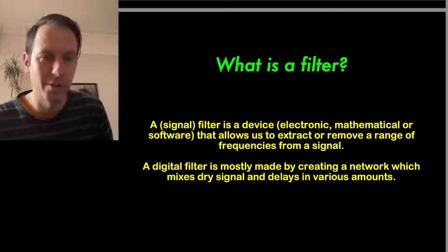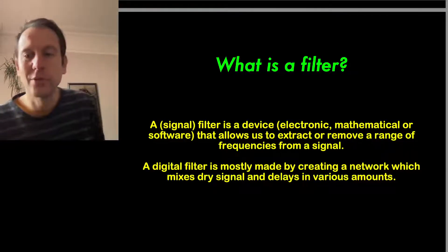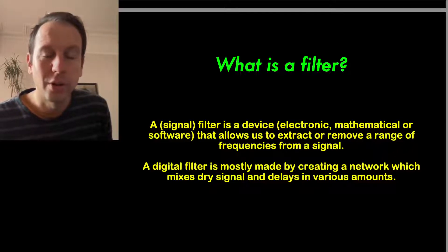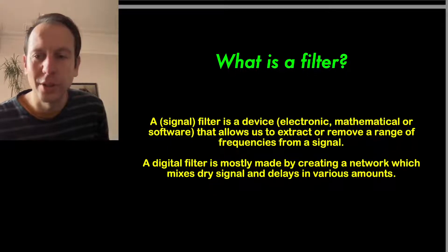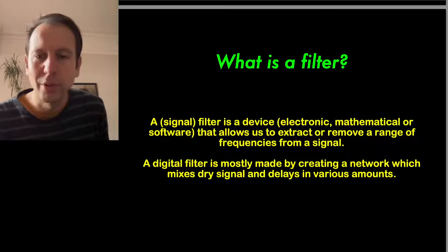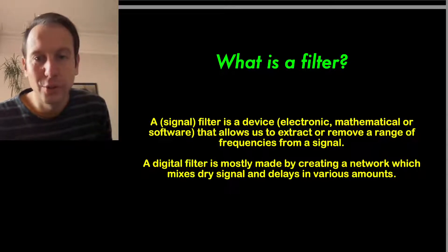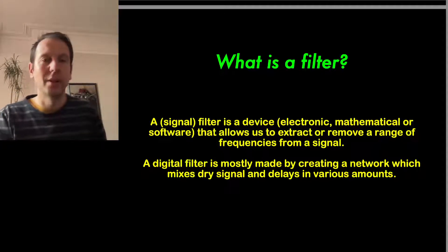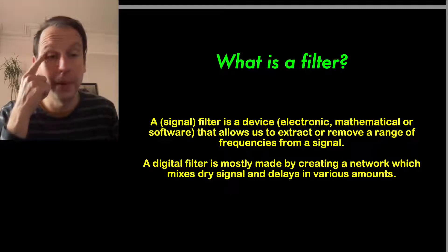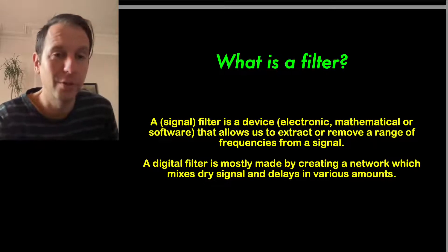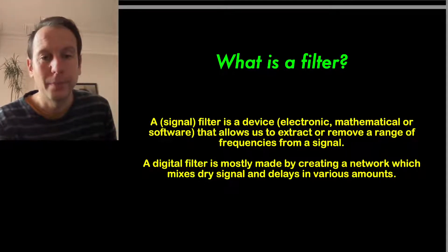We'll first discuss signal filters and then broaden the discussion. In terms of signals, they could be analog electronic signals or digital electronic signals, and the principles are quite similar. With electronics you're using electric components; with digital signals we're using mathematical operations to filter them. What does it do? It attenuates certain frequency regions, and filters can also ring — if you ping a filter with a little click, it might give you a fairly long signal as a response.